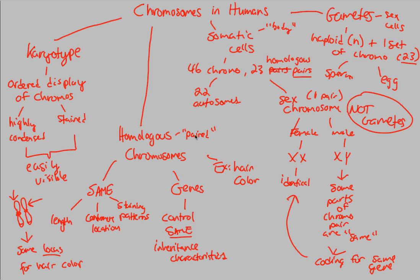Overall, we understand that chromosomes in humans can be seen through a karyotype, which provides highly condensed and stained, easily visible chromosomes. Homologous chromosomes are simply paired chromosomes with the same length, centromere location, and staining patterns — as shown by the hair color example where both chromosomes share the same locus. We also defined somatic cells and gametes as basically mutually exclusive: somatic cells are body cells with 46 chromosomes in 23 pairs, while gametes — sperm and egg — are haploid with one set of 23 chromosomes. Sex chromosomes are not the same as gametes. Now that we've established chromosomes, we can get into the process of meiosis in more detail by looking at life cycles in the next videos.